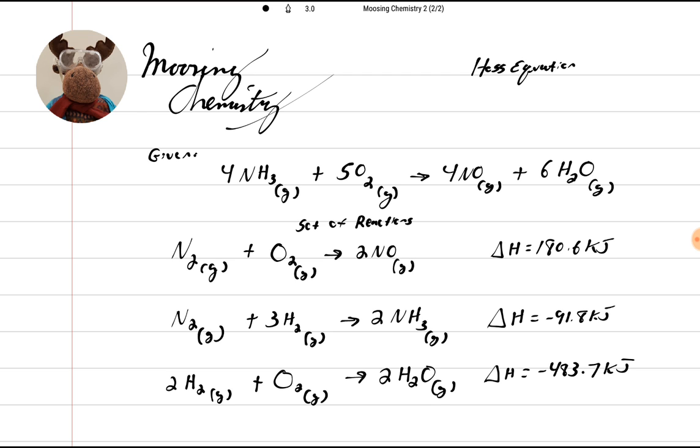So we've got the 4NH3 gas plus 5O2 gas yields 4NO gas plus 6H2O gas. So now we're going to look at our set of reactions, the sub-reactions.